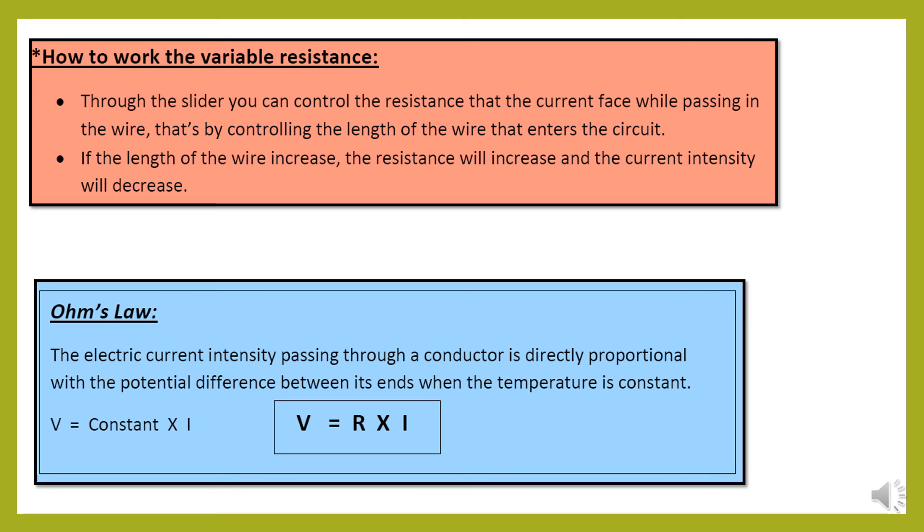Ohm's law. The electric current intensity passing through a conductor is directly proportional with potential difference between its ends when temperature is constant. So potential difference is directly proportional with current intensity when the temperature is constant.